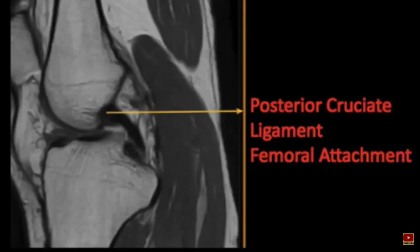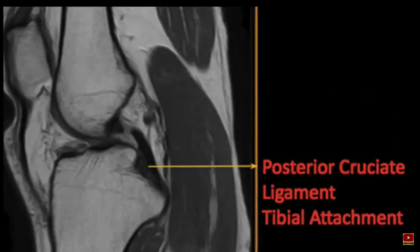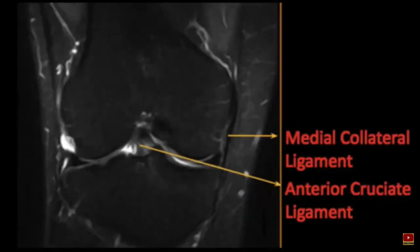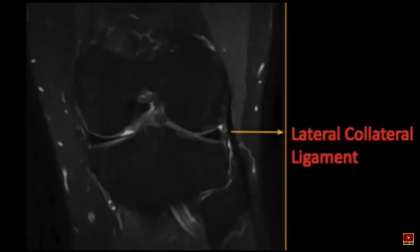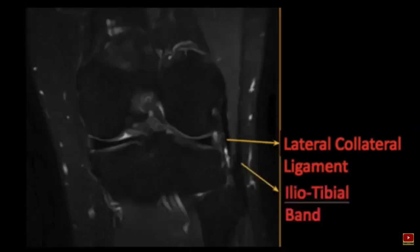Next we come to the posterior cruciate ligament. It has a femoral and tibial attachment which may not be seen in the same plane — this is normal. After that, I see the medial collateral ligament: its continuity, signal changes, and surrounding structures, looking for edema. For the MCL, we assess the superficial and deep fibers. Then we come to the lateral collateral ligament, which is usually not seen in one single plane unless it is redundant or pathology is suspected.